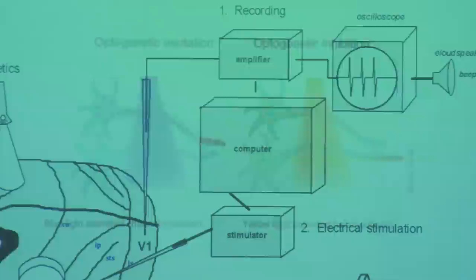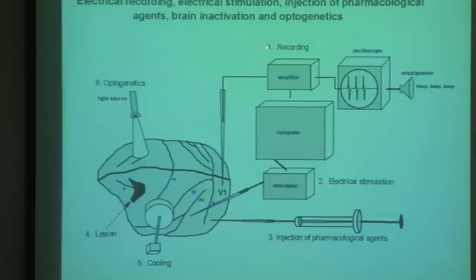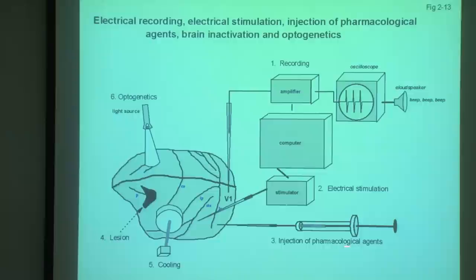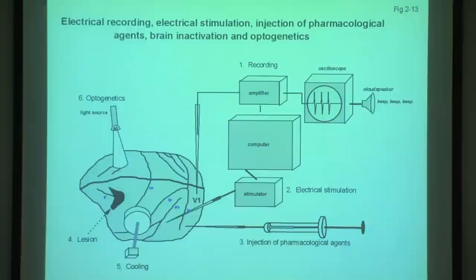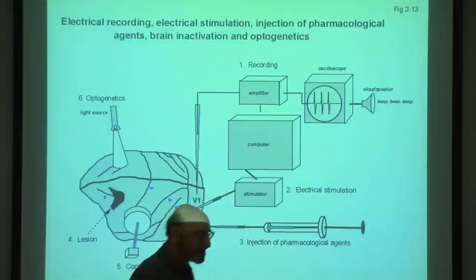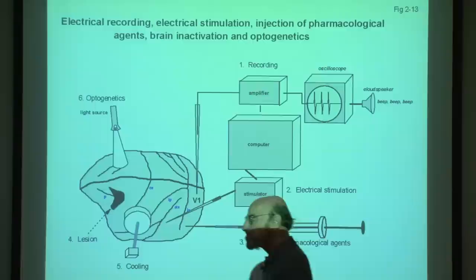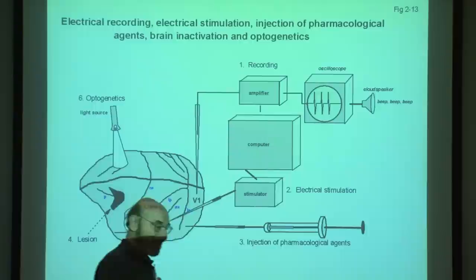To summarize the techniques other than psychophysics: number one, electrical recording using microelectrodes; second, electrical stimulation; third, injection of pharmacological agents; then methods to inactivate regions either permanently by lesions or reversibly by cooling or injecting various substances; and lastly, optogenetics, which enables you to activate or inhibit cells by shining light onto the brain. Individuals who want to become neuroscientists will have to master at least some of these techniques to carry out new and original experiments on how the brain works.